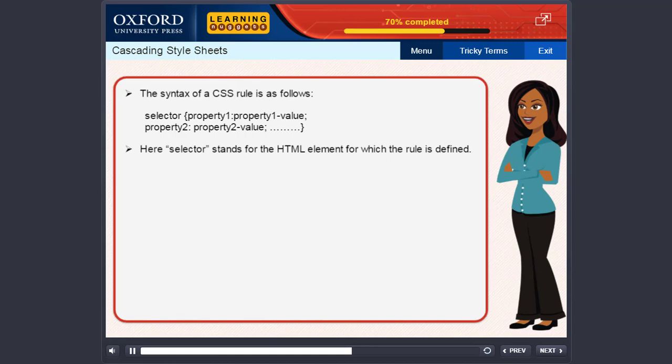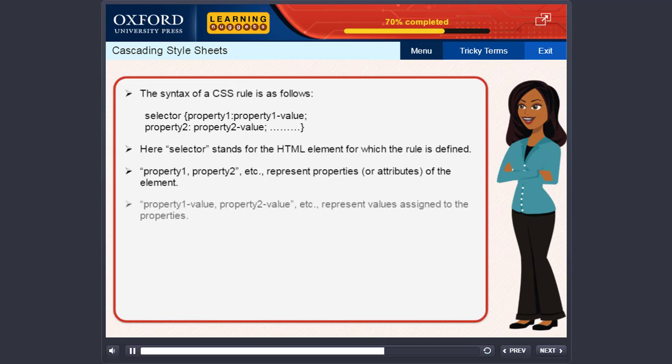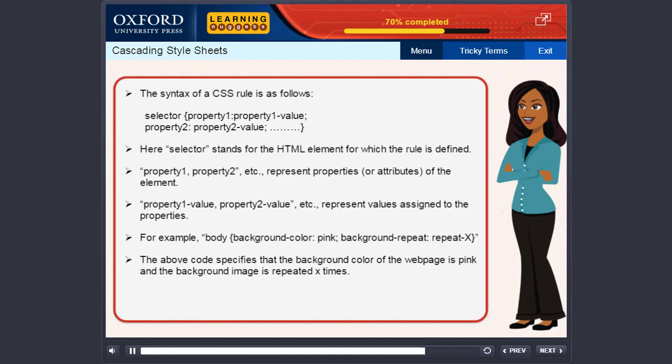Here, selector stands for the HTML element for which the rule is defined. Property 1, property 2, etc. represents properties or attributes of the element. Property 1 value, property 2 value, etc. represent values assigned to the properties. For example, body, background color, pink, background repeat, repeat x. The above code specifies that the background color of the webpage is pink and the background image is repeated x times.